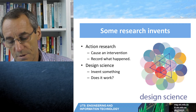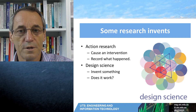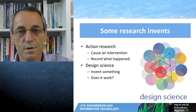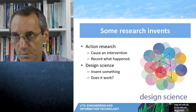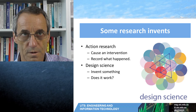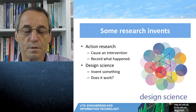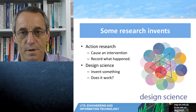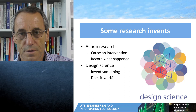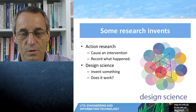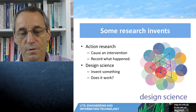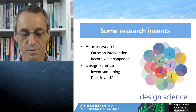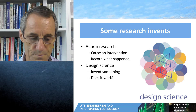Action research is where you've got a situation, you cause an intervention, and you look at what happened. This could be you introduce a change in work practices and you observe what happened. Design science is where you want to create something new — you go and do that and you examine the result. So let's have a look at those two.